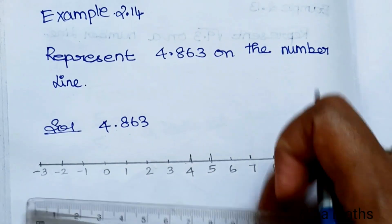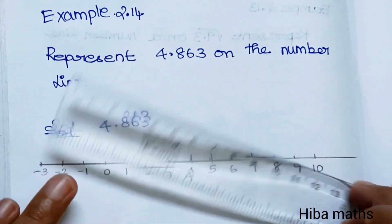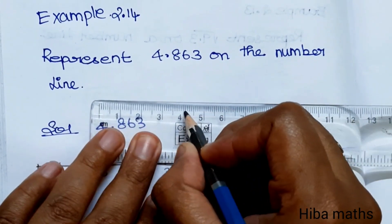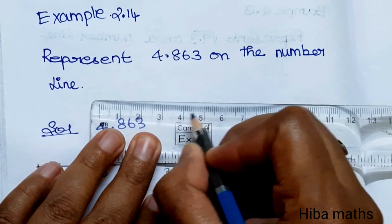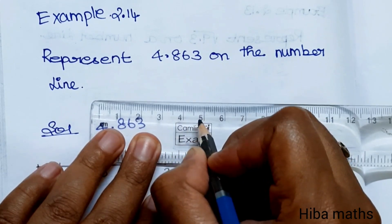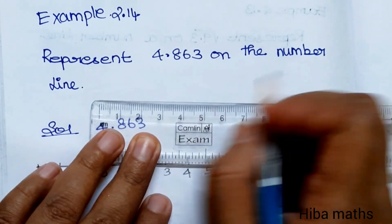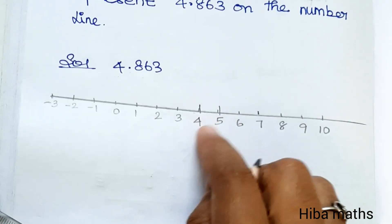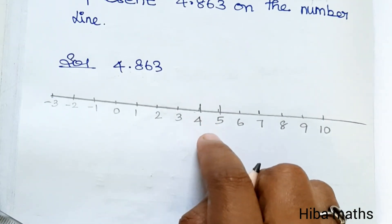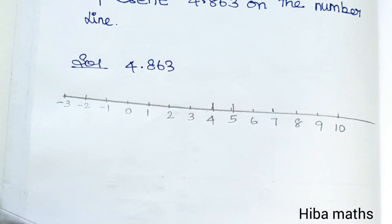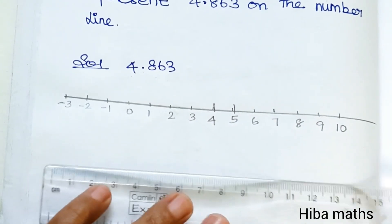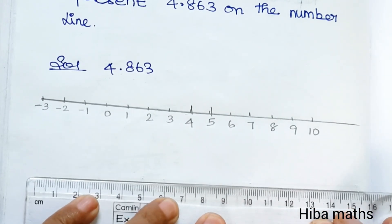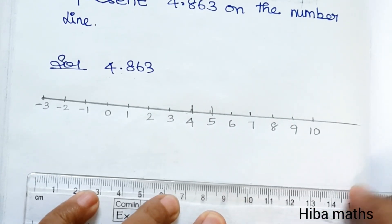So, let's draw the value on the scale. 1, 2, 3, 4, 5. So, 4 and 5 — we will work between these. 4 and 5 will give us 4.8. Let's draw a line.